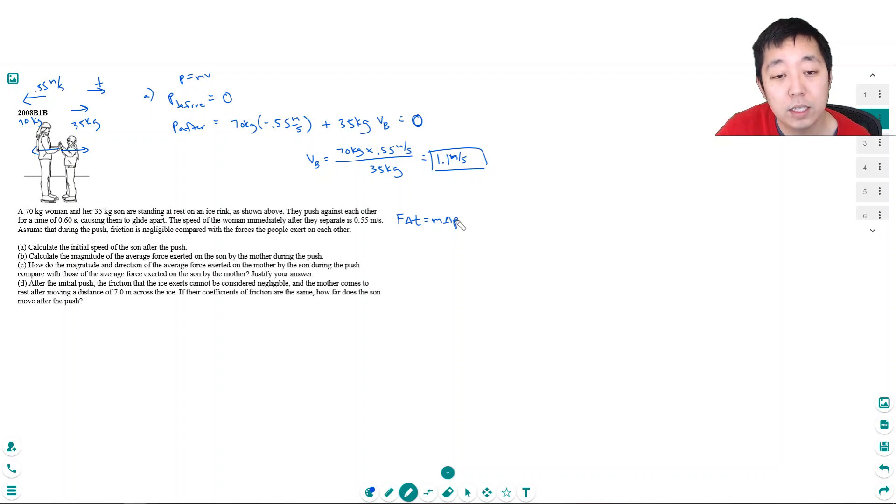We would say that the average force or any change in momentum is due to an impulse, a force applied over time. So to find the force, I need to find the change in momentum divided by how long it took to change the momentum.